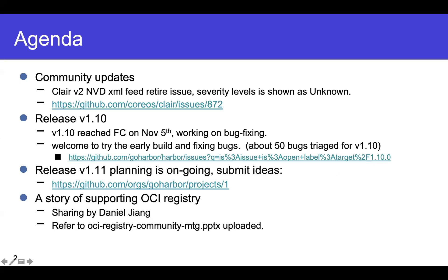The third big item is about the next version, V1.11. Currently we are planning the scope of the 1.11 version. We are tracking items through the project dashboard — please take a look and submit any ideas you think are urgent and important for end users. We will consolidate with current items and then present what we are going to deliver in 1.11 in following community meetings.